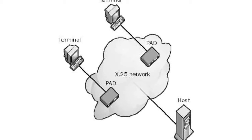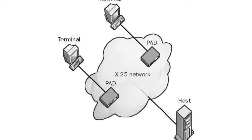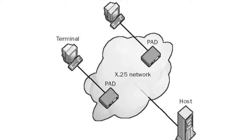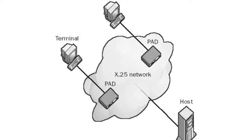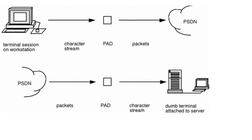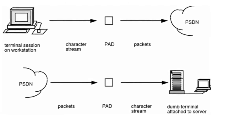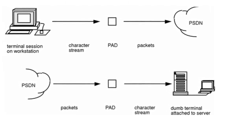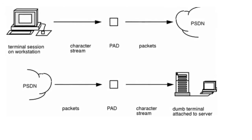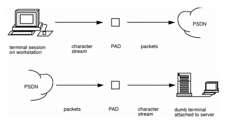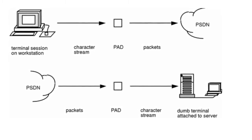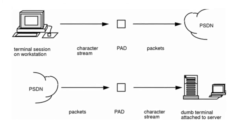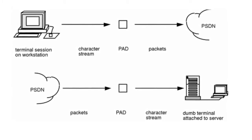Note also that PADs are DCEs, and even though they are located at the customer premises, they are considered nodes on the X.25 network. The PAD's function is simply to assemble data, such as strings of characters, into packets to transmit over the X.25 network to the remote host, and to disassemble packets that are received. PADs are often used for providing remote access via dumb terminals over X.25 to mainframe or mini-computer hosts.